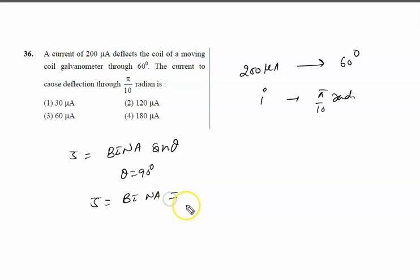And this torque must be equal to the restoring torque, and restoring torque is written as k times φ. So when you see both equations, you can say I is proportional to φ.